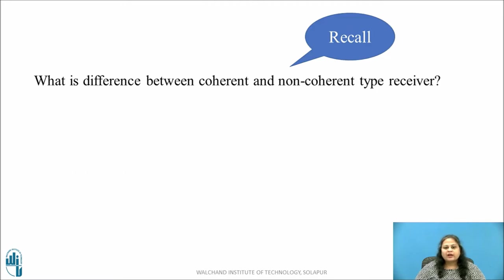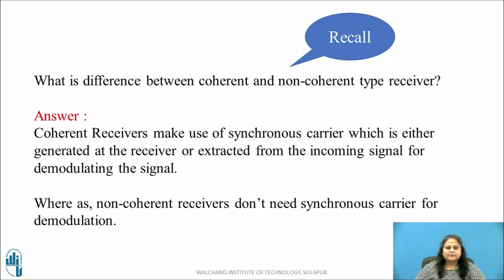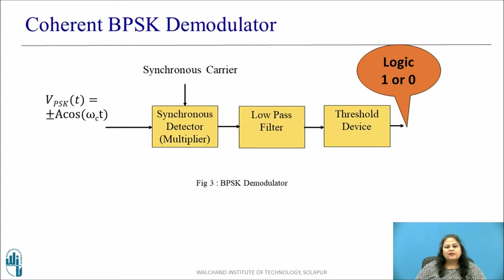Before moving ahead, pause this video and recall: what is the major difference between coherent and non-coherent receivers? The major difference is that coherent receivers need a synchronous carrier for demodulation, which is either generated at the receiver or extracted from the incoming signal, whereas non-coherent receivers do not need a synchronous carrier for demodulation.